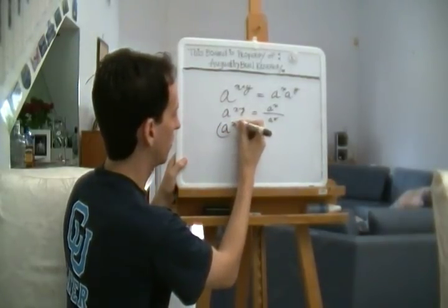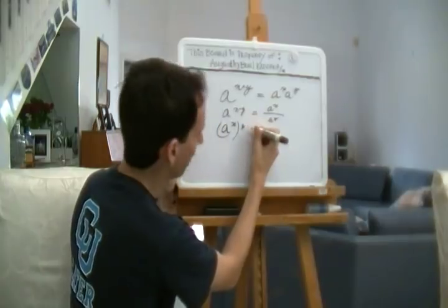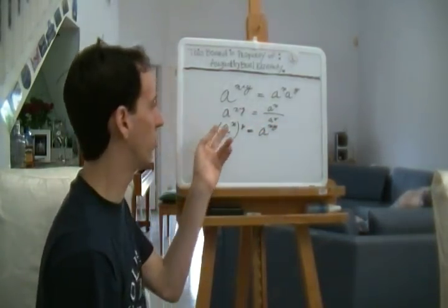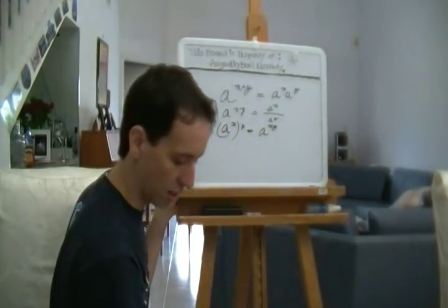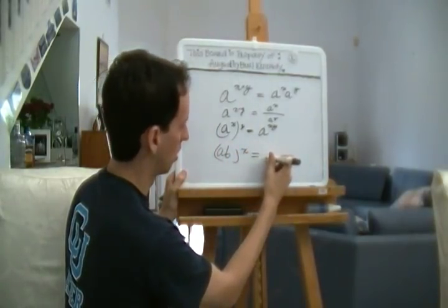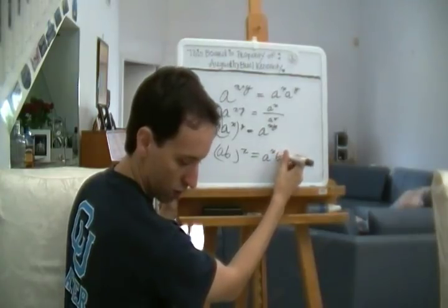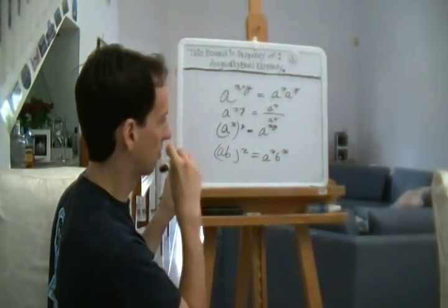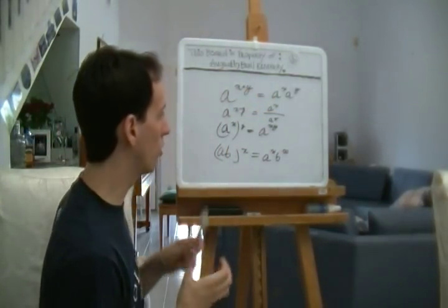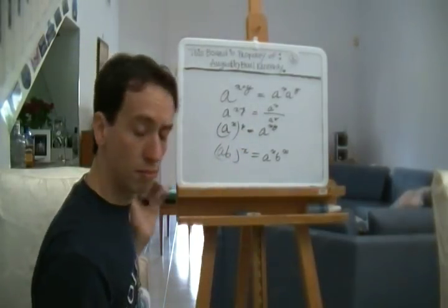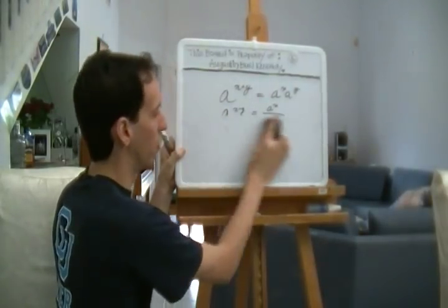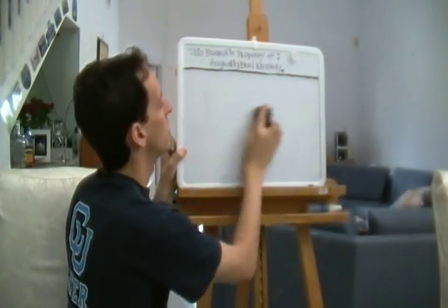What others do we have? We have, this one's pretty basic, a to the x y equals a to the xy. Associative, I believe, and that's pretty easy to understand and to see. And then there's ab to the x is a to the x times b to the x. Kind of like a variation of the top. So those are your rules of exponents. Learn them, know them. I'm sure you probably know them already, but if you don't, there they are. Some of them. Those are the basic ones that we'll be using.